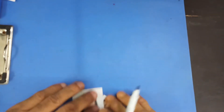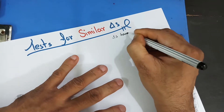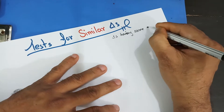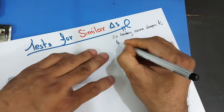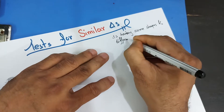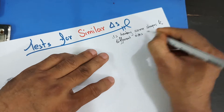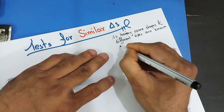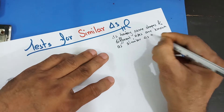What does that actually mean? Same shape. Triangles having the same shape and different sizes are known as similar triangles.